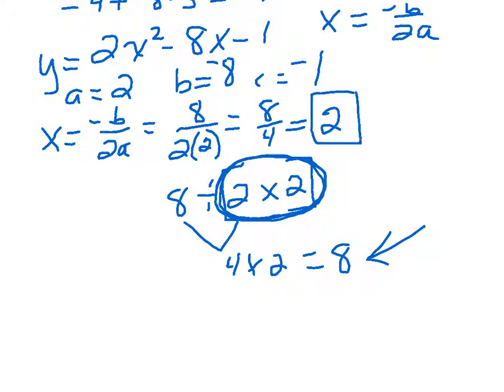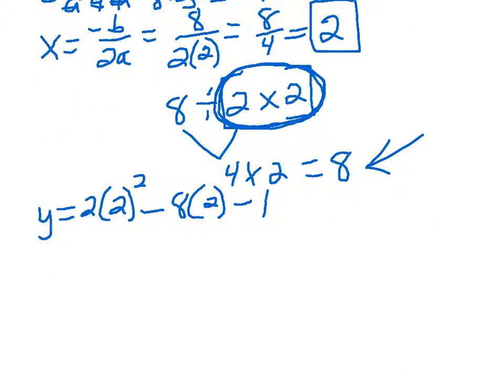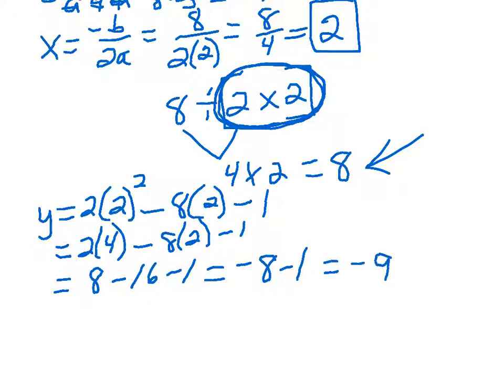Alright, so we have our x value. It's positive 2. Now I'm going back to our original equation that they gave us, the 2x squared minus 8x minus 1. Wherever I see an x, I'm going to put in a positive 2. And then I'm just going to apply the order of operations. Minus 8 times 2. So order of operations has exponents first, so 2 squared becomes 4. Again, I'm baby-stepping just to really re-emphasize things. Alright, now I can multiply. 2 times 4 is 8. 8 times 2 is 16. And again, I reset like I'm a typewriter. I start from left to right again. 8 minus 16 is negative 8. And then finally, negative 8 minus 1 gives us negative 9. So the vertex happens when x is 2 and y is negative 9.